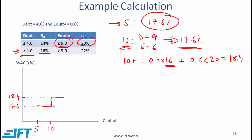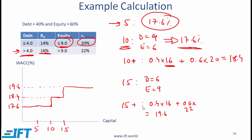What is happening at the $10 million mark is that as we raise a little more than $10 million, our cost of capital jumps up to 18.4%. If the company raises $15 million, debt would be $6 million and equity $9 million. At $6 million, the cost of debt is 16%. At $9 million equity, we are just at the edge and the cost of equity is 20%. So at $15 million, the WACC is still 18.4%.